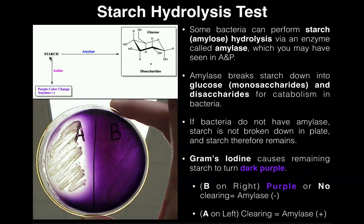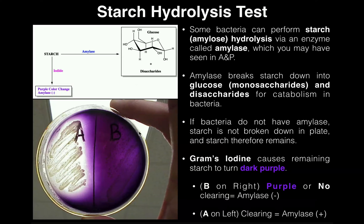The way we test to see if there's any starch is we use iodide — specifically, we're going to be using Gram's iodine. This is actually the iodine that we used in the Gram stain. So we're going to add Gram's iodine to the plate. On this plate — this is not how we do it specifically in the lab, we'll look at that in a minute — we have one species on the left written as A, and one species on the right written as B. And when you pour iodine on the plate after you've incubated it and grown the bacteria, anywhere where there's starch, it turns purple.